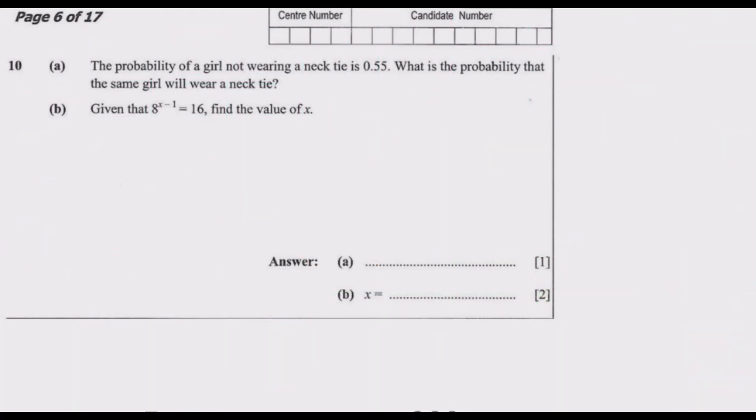Welcome to the fourth episode in which we are looking at the 2020 GCE Mathematics Paper 1, question 10. The question reads: The probability of a girl not wearing a necktie is 0.55. What is the probability that the same girl will wear a necktie? There are two possibilities - either a girl is wearing a necktie or not.